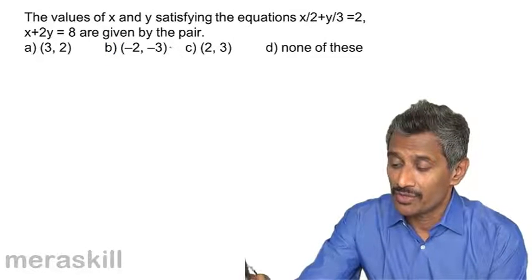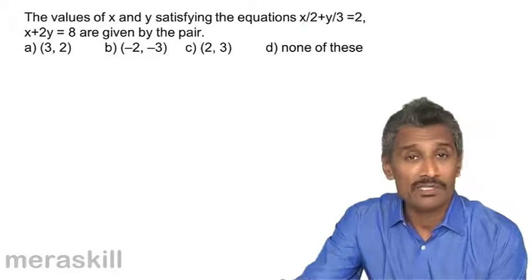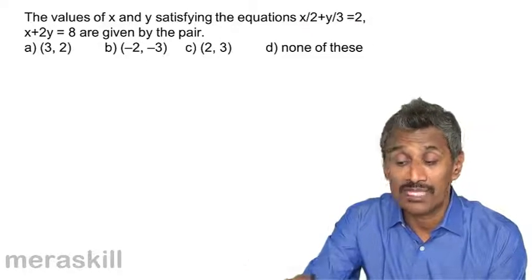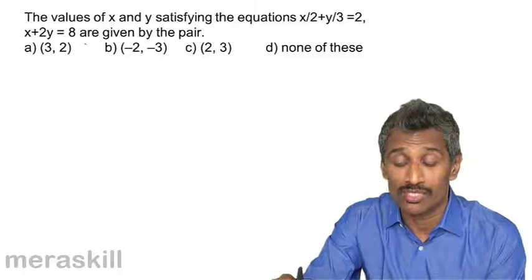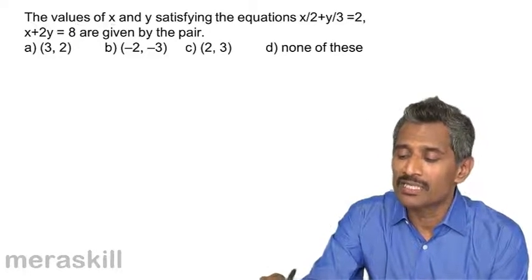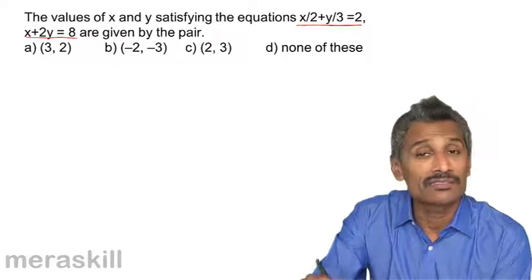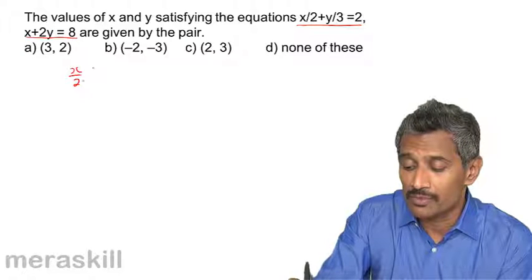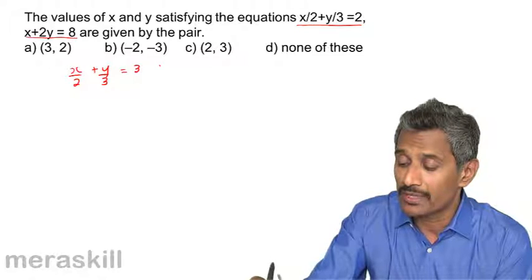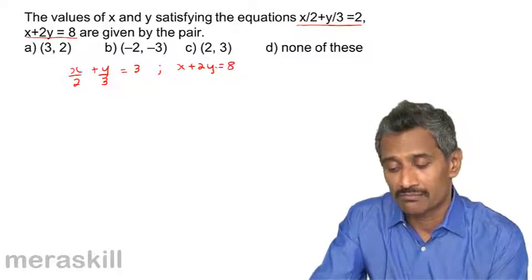Now we have a situation: find the values of x and y satisfying the equations x by 2 plus y by 3 equals 2, and x plus 2y equals 8. I remind you these are a pair of simultaneous equations — to get a unique solution we need to solve them together. Let's solve them.